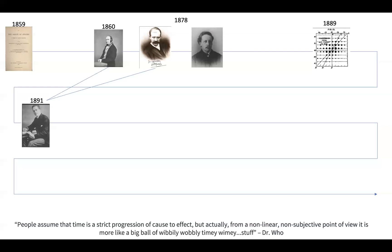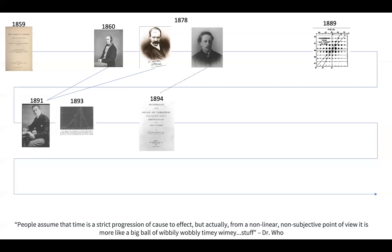By 1893, Weldon and Pearson were publishing papers together describing asymmetrical distributions and introducing the concepts of standard deviations, covariance, and coefficients of variation. Meanwhile, Bateson and his group in Cambridge was focusing on what they described as dimorphic or discrete traits. In his widely read book Materials for the Study of Variation in 1894, Bateson argued the case for the importance of discontinuous variations or mutations of large effect in evolutionary change.